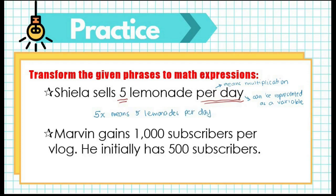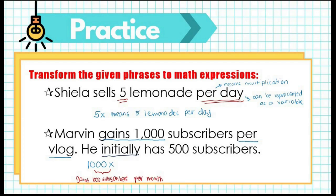Another example: Marvin gains 1,000 subscribers per vlog and initially has 500 subscribers. We analyze the keywords. 'Gains 1,000 per vlog' is represented as 1,000x, meaning there is a gain of 1,000 subscribers per vlog. The second sentence states he initially has 500 subscribers — that is the starting number, representing a constant. So we add 500, giving us 1,000x plus 500 to include the initial number of subscribers.